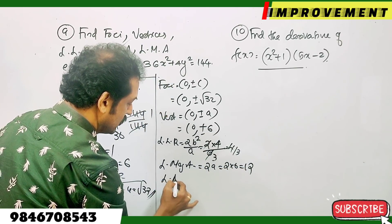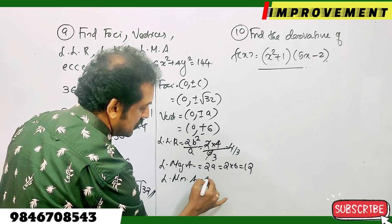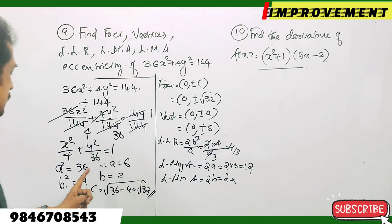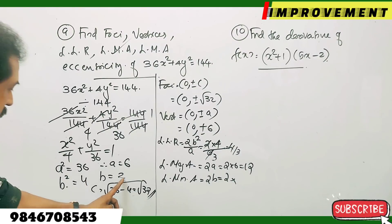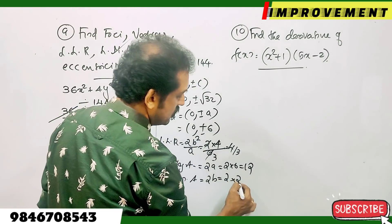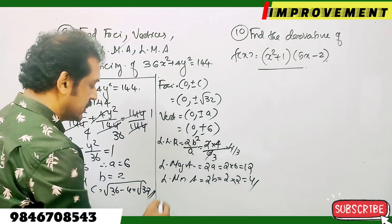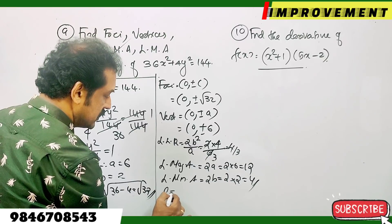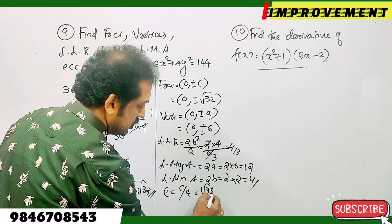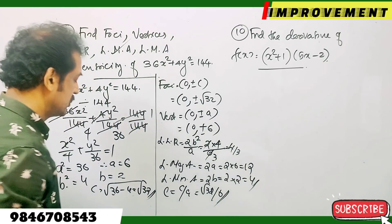Length of minor axis equals 2b equals 2 times 2 equals 4. Eccentricity equals c divided by a, that is root 32 divided by 6.